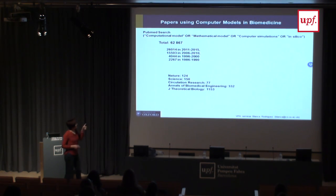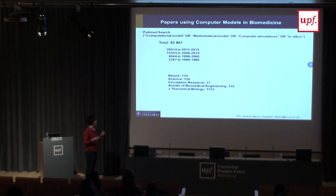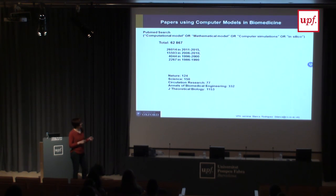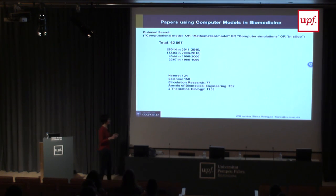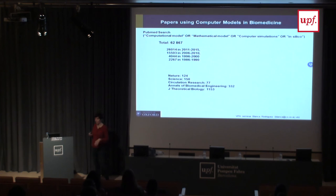I did a PubMed search looking at how many papers have been published with the terms computational model, mathematical model, computer simulations, or in silico in recent years, and there is a clear increase. I wanted to see how many were in very high-impact journals showing truly new research findings. Only a small fraction are in cutting-edge publications. There is still an effort to be made to move modelling and simulation to the forefront of biomedical science.